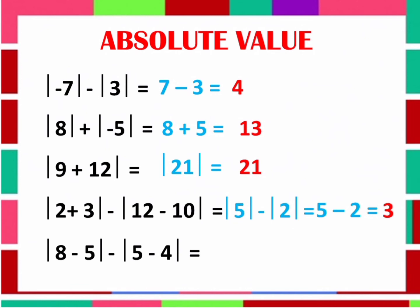Last example: the Absolute Value of 8 minus 5, minus the Absolute Value of 5 minus 4. First, 8 minus 5 is equal to 3, and 5 minus 4 is equal to 1. Then get the Absolute Value of both: the Absolute Value of 3 is 3, and the Absolute Value of 1 is 1. So 3 minus 1 is equal to 2.